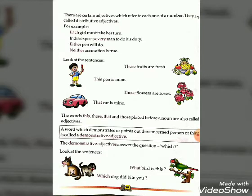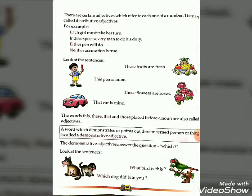Now look at the sentences: 'These fruits are fresh,' 'This pen is mine,' 'Those flowers are roses,' 'That car is mine.' The words this, these, that, and those placed before a noun are called adjectives. Come to demonstrative adjective.